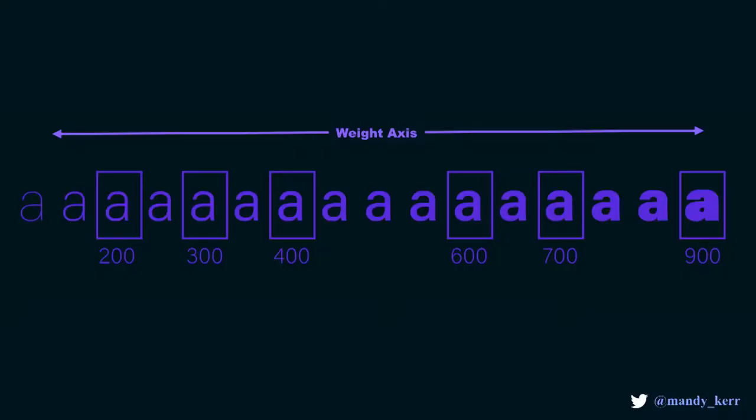The way this is created is the font designer creates a style axis in the font itself — for example, a weight axis. Where you would have a 400, a 700, and a 900 weight, that all exists along that axis. But the benefit of a variable font — what makes them really special — is that you don't just have those individual master weights. You have access to all the values in between, because the axes can be interpolated. So this axis goes from 100 to 900 in font weight, and we can access 101, 102, 103, 104, and so on all the way up to 900.